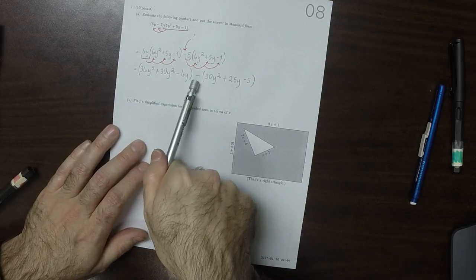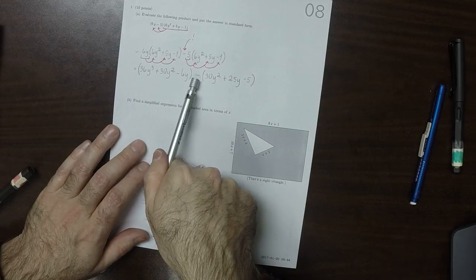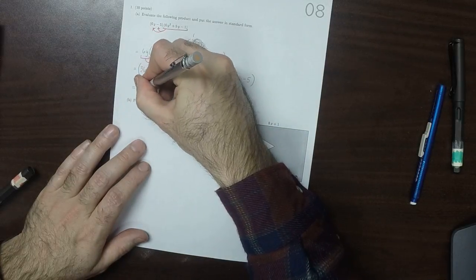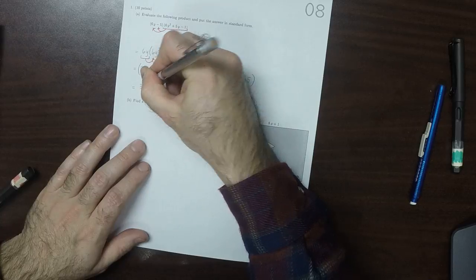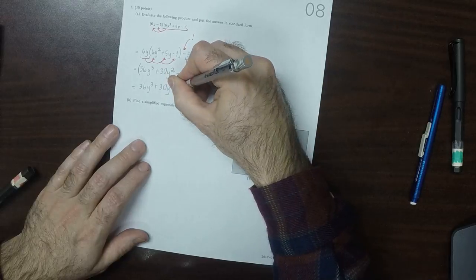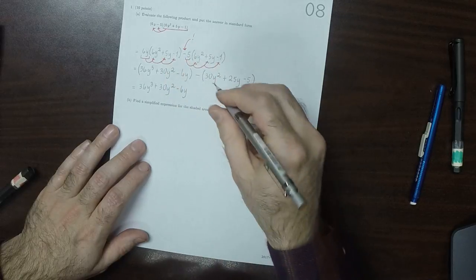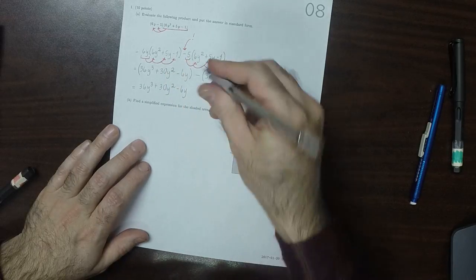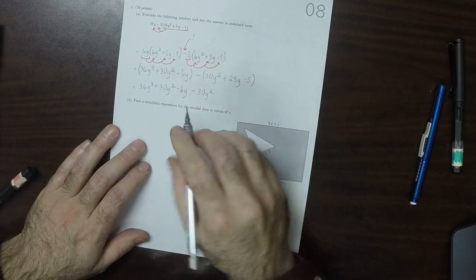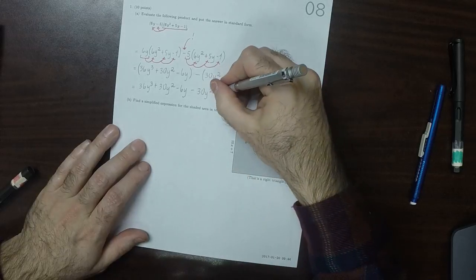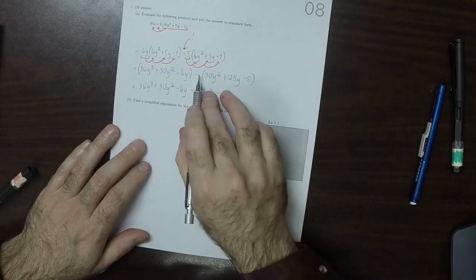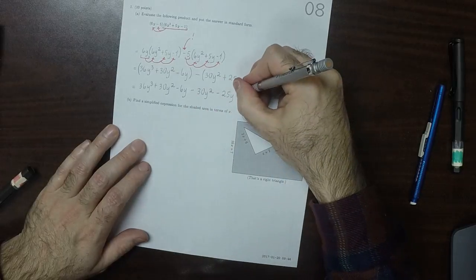So now I'm going to deal with the negative. So this would be 36y cubed plus 30y squared minus 6y. So now minus 30y squared, minus 25y. Minus negative 5, so plus 5.